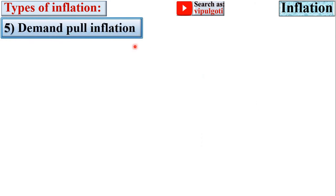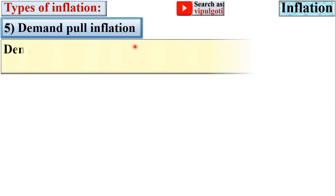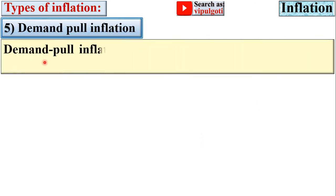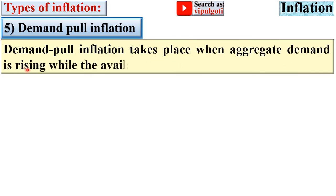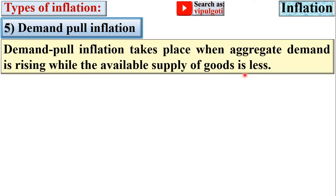Demand-pull inflation takes place when aggregate demand is rising while the available supply of goods is less.